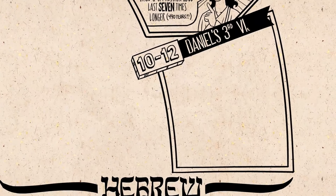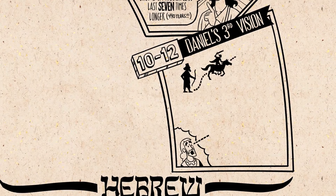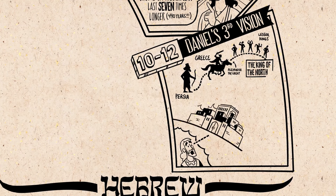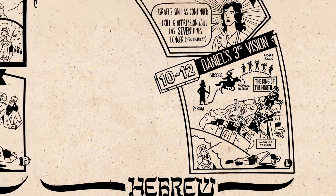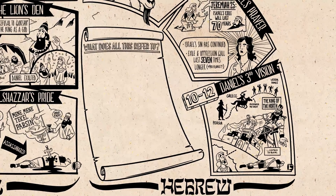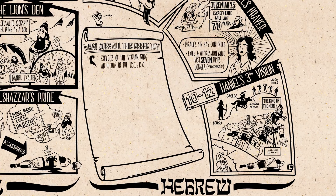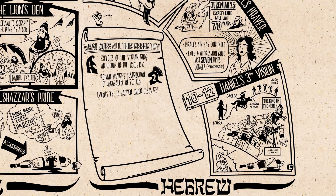Daniel is deeply disturbed by this and has one final vision. We're shown the same sequence of kingdoms: Persia, then Greece and Alexander the Great, followed by lesser kings — all leading up to a final king of the north, who will invade Jerusalem, set up idols in the temple, and exalt himself above God. But then, all of a sudden, this king comes to ruin. There has been endless debate about what all of these visions refer to. Many see a clear connection to the exploits of the Syrian king Antiochus in the 160s BC, who killed many faithful Jews in Jerusalem and set up idols in the temple. Others think it points forward to the Roman Empire's role in the execution of Jesus and the destruction of Jerusalem and the temple in AD 70. And still others think it will be fulfilled in future events that have yet to happen, when Jesus will return.